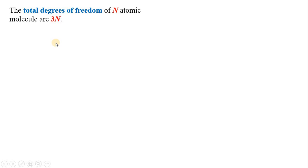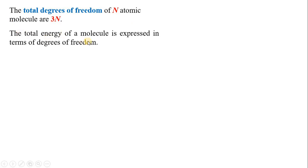The total degree of freedom of an n-atomic molecule is 3n. Each atom has 3 degrees of freedom, so n atoms together have 3n degrees of freedom. The total energy of a molecule is expressed in terms of translational, rotational, and vibrational degrees of freedom.